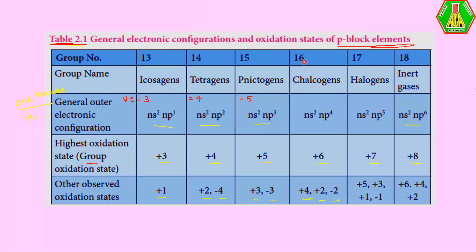The next group from P-block is group 16, called the chalcogens. The valence electron count is 6, so the general outermost electronic configuration is ns²np⁴. The group oxidation state of chalcogens is +6, and other observed oxidation states are +4, +2, and −2 also.